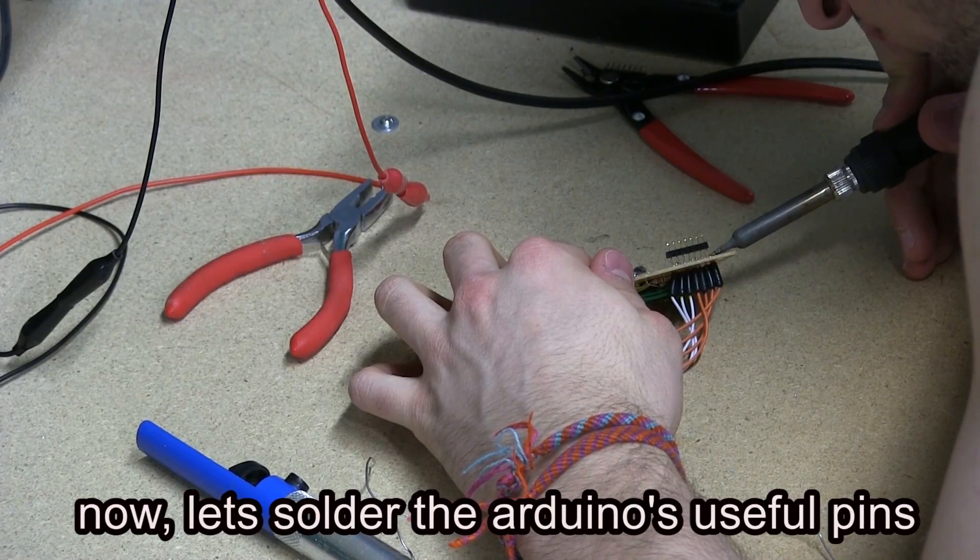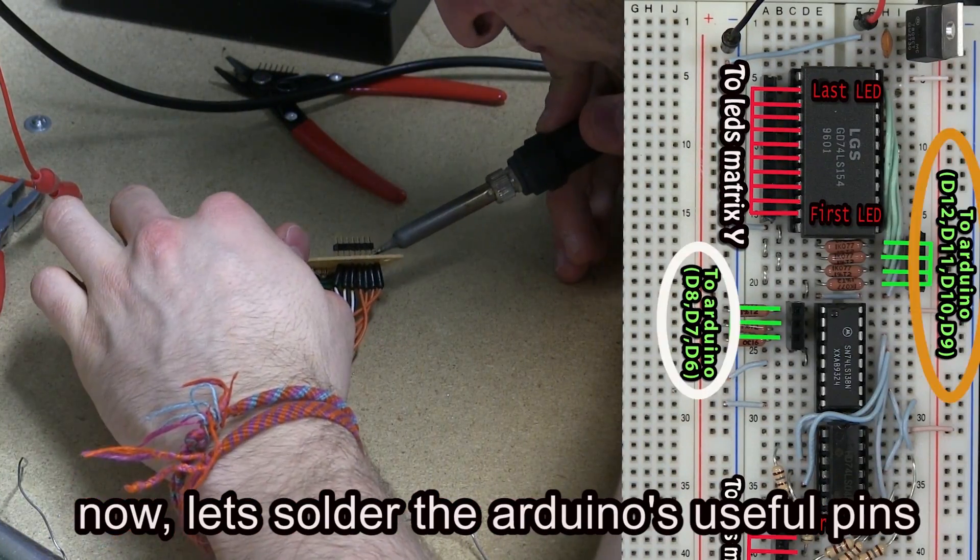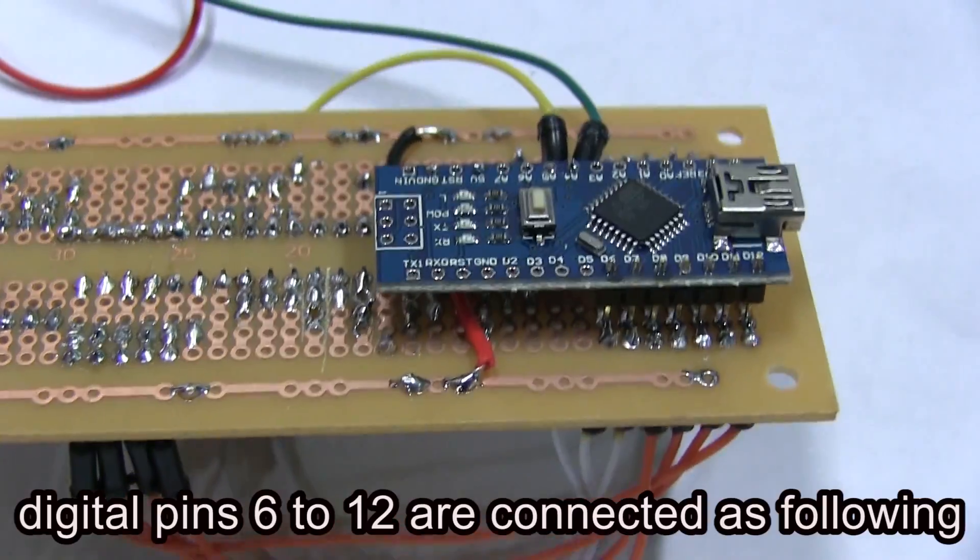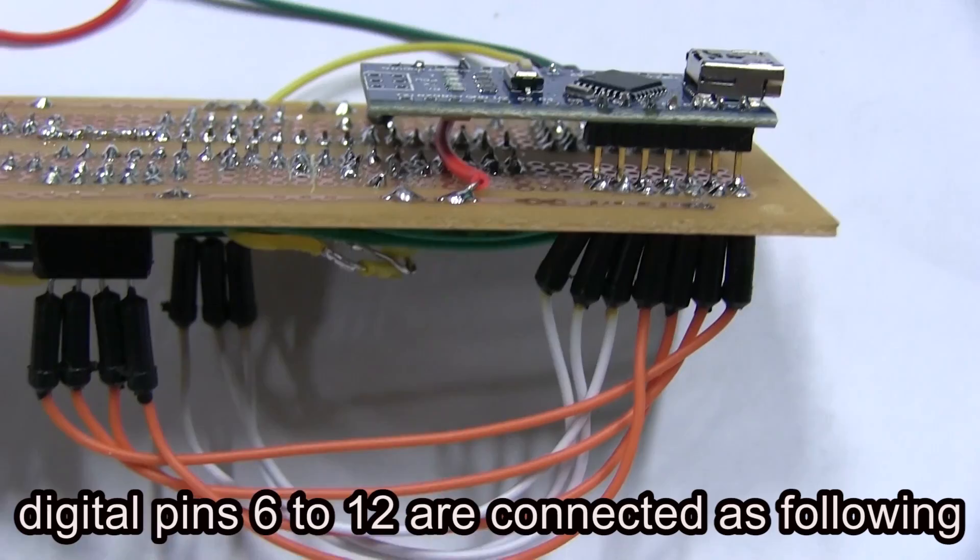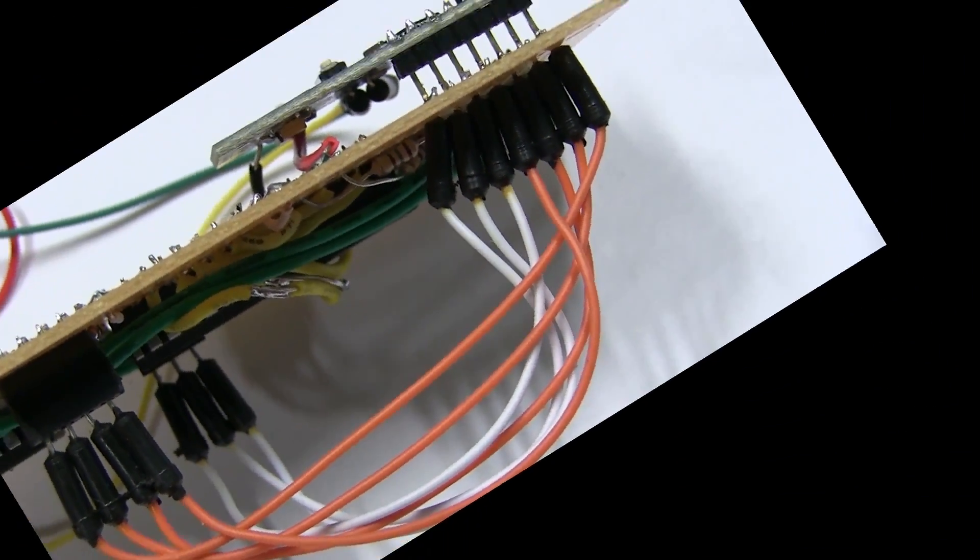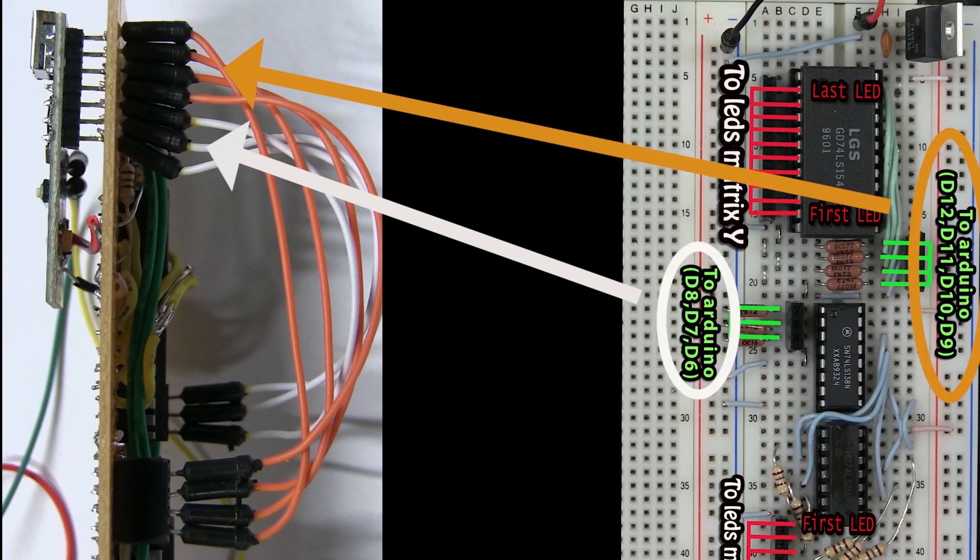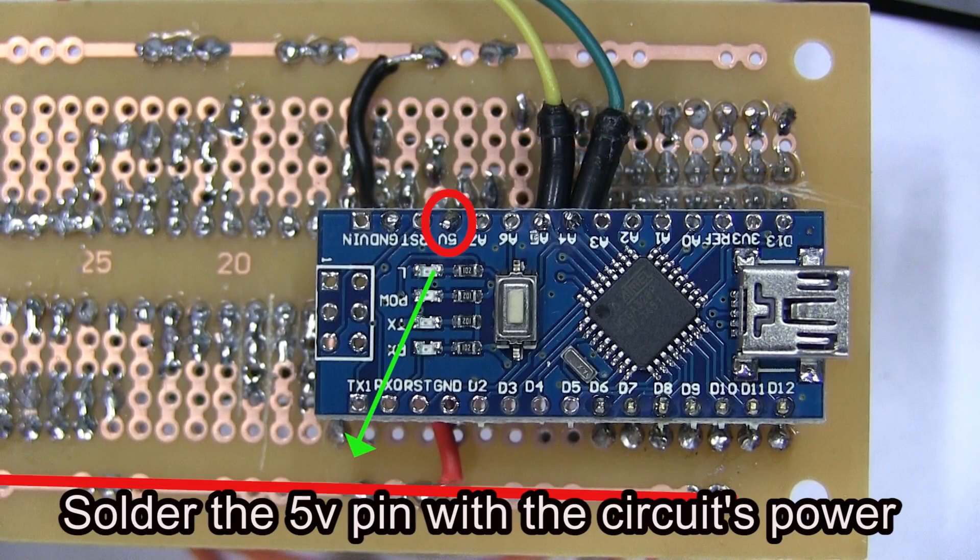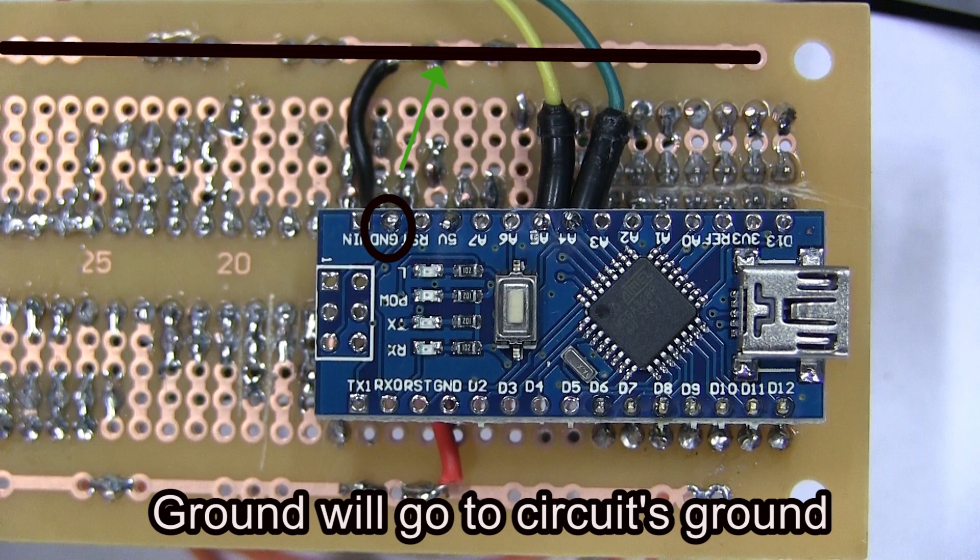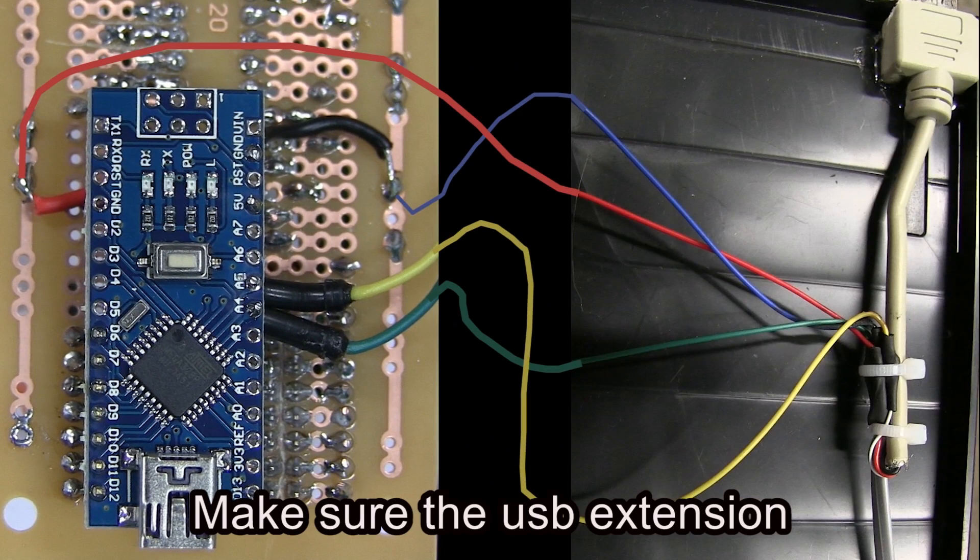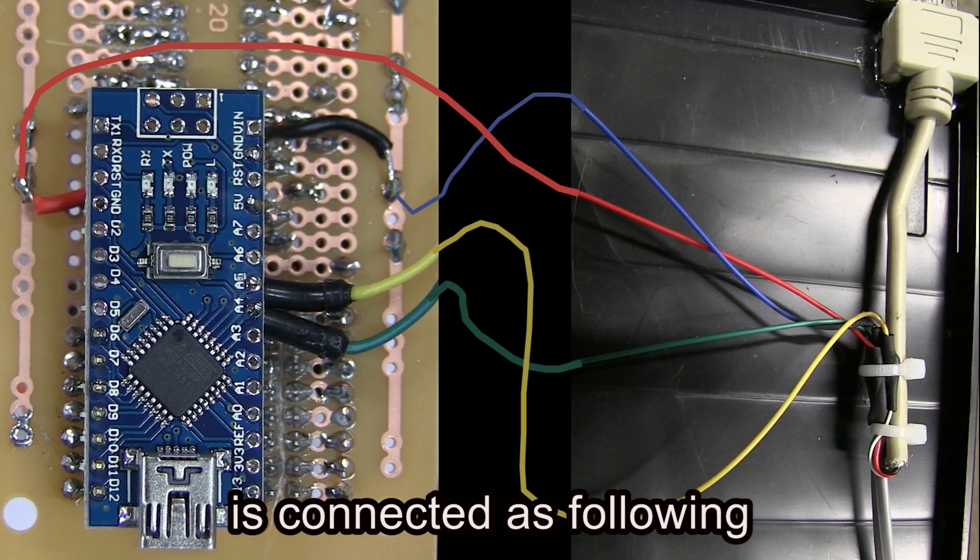Now let's solder the Arduino's useful pins. Digital pins 6 to 12 are connected as following. Now solder the 5V pin with the circuit's power. Ground will go to the circuit's ground. Make sure the USB extension is connected as following.